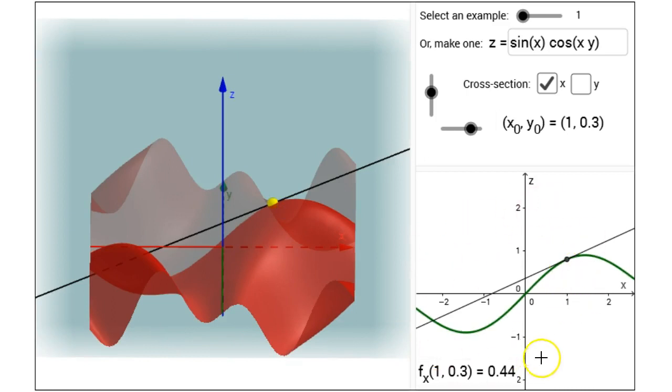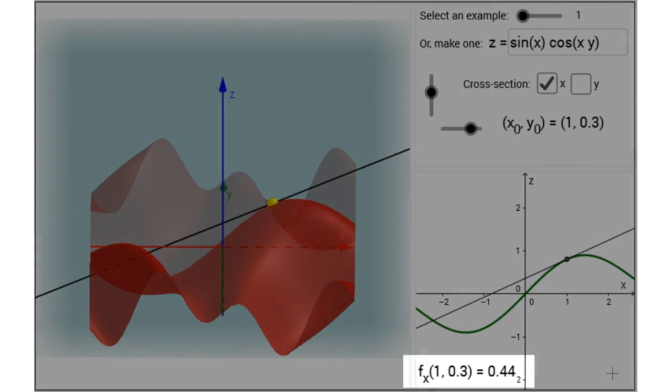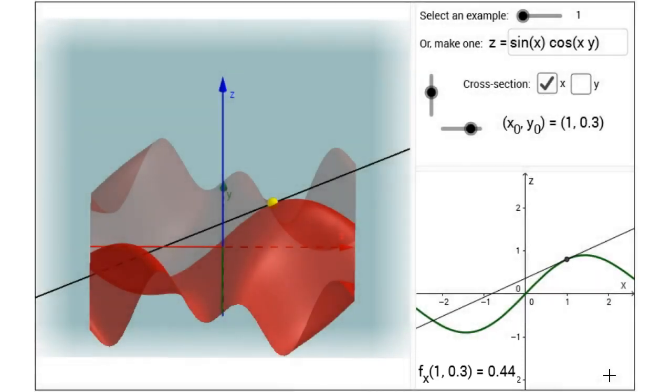This cross-section is shown in the bottom right, and the expression at the bottom shows me my partial derivative with respect to x. That is f sub x of 1 comma 3 equals 0.44. So that's the slope. As x increases, the rate of change of z is 0.44.